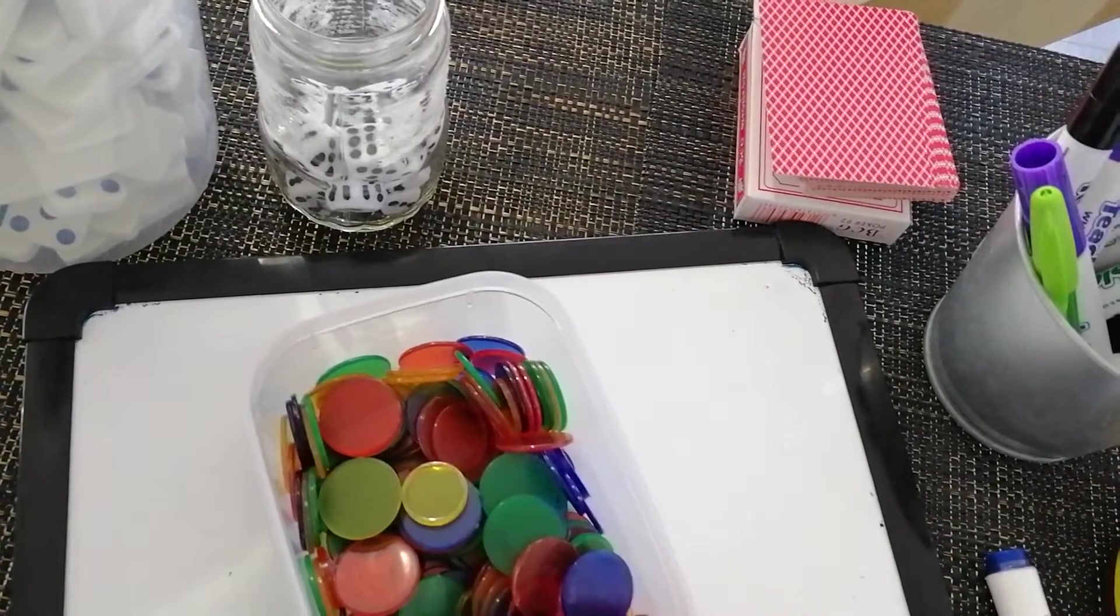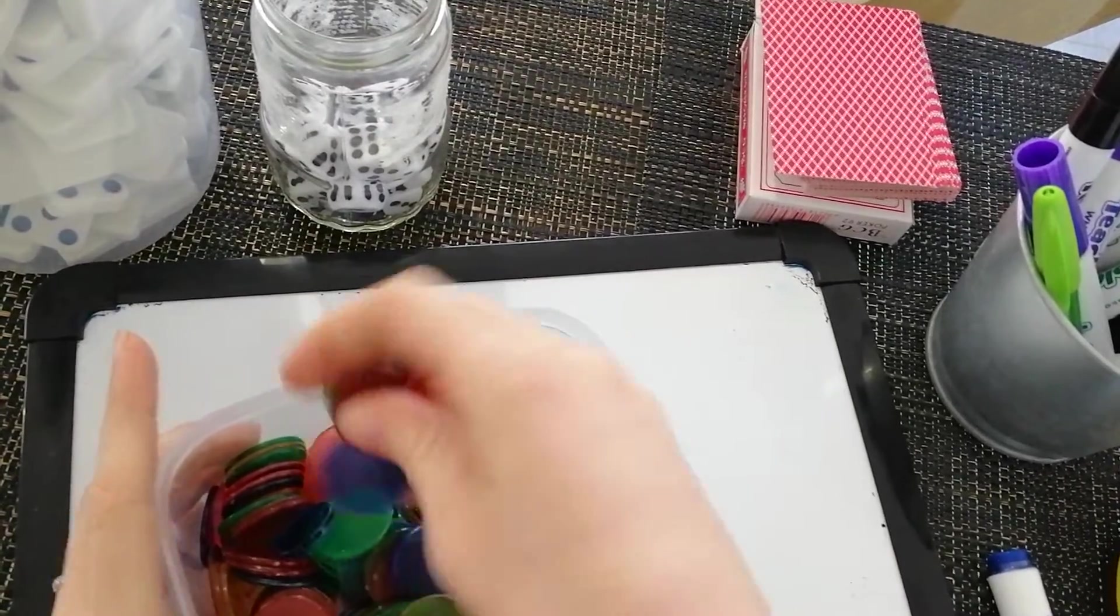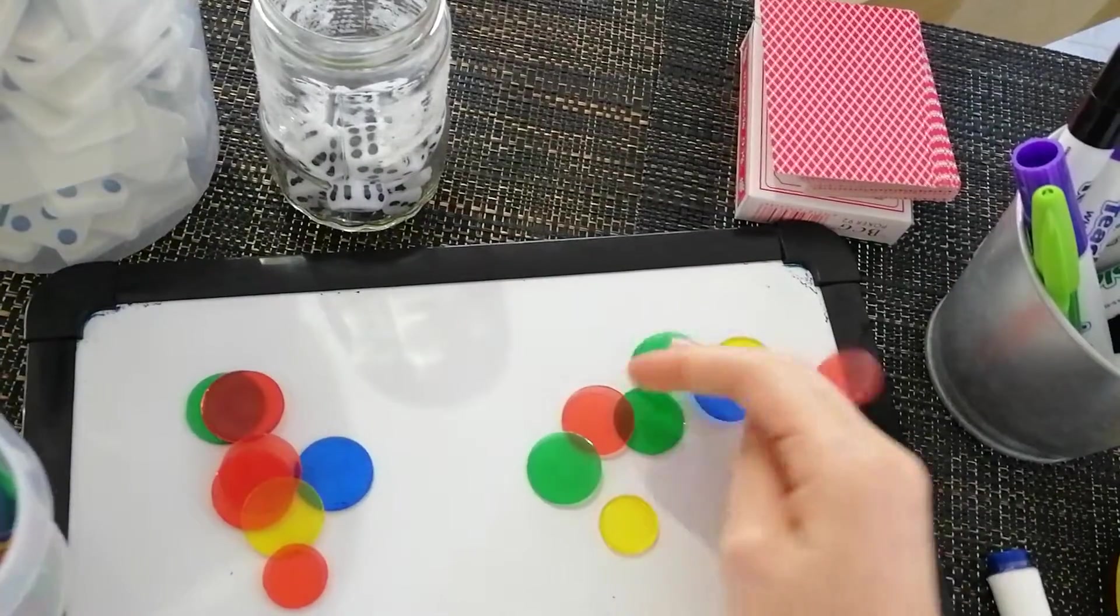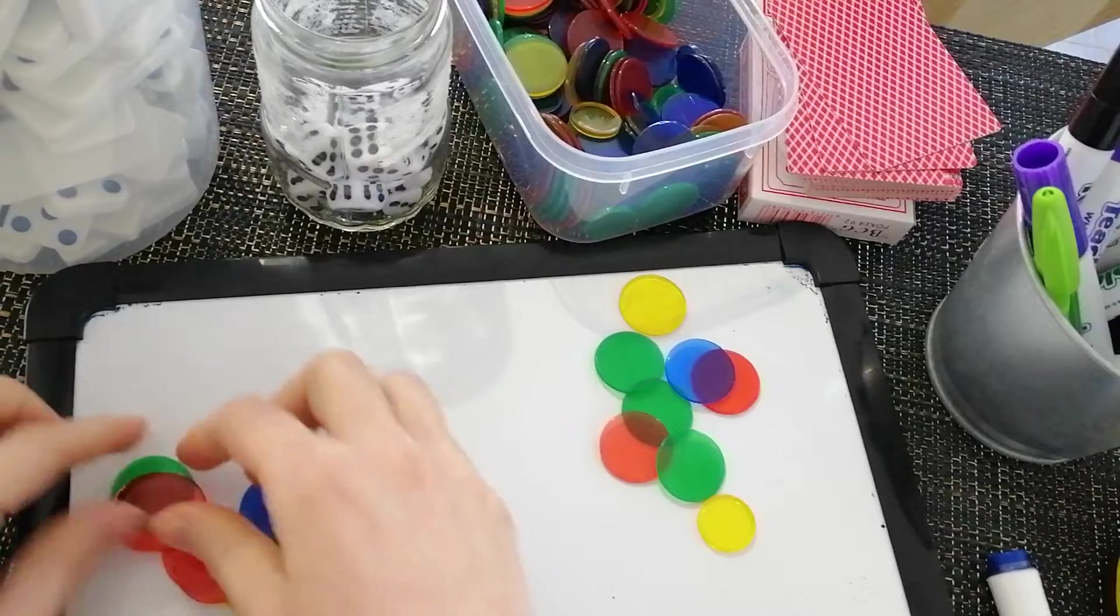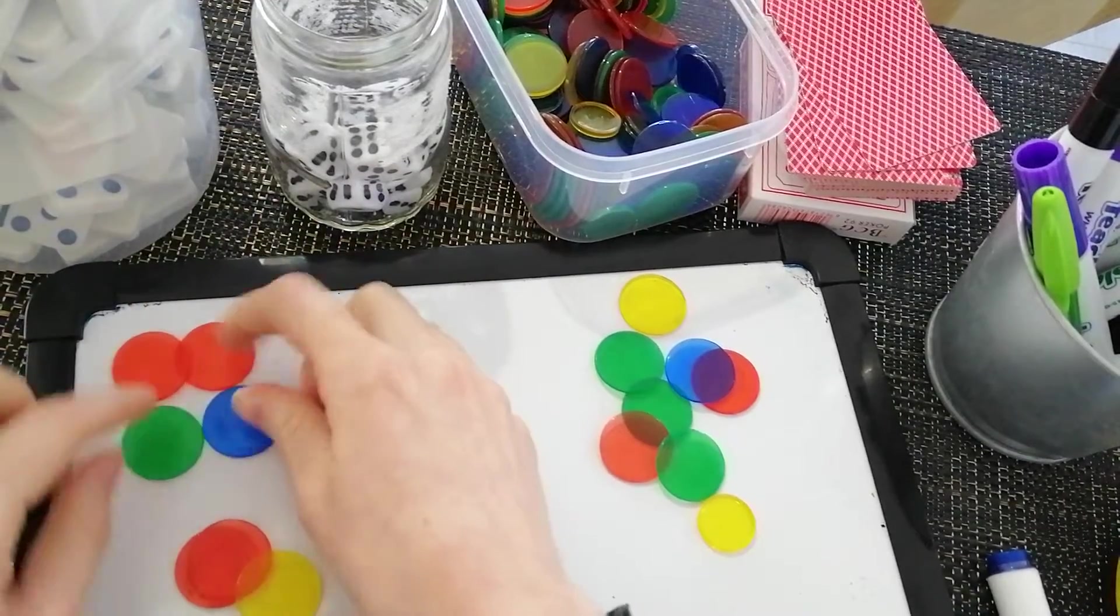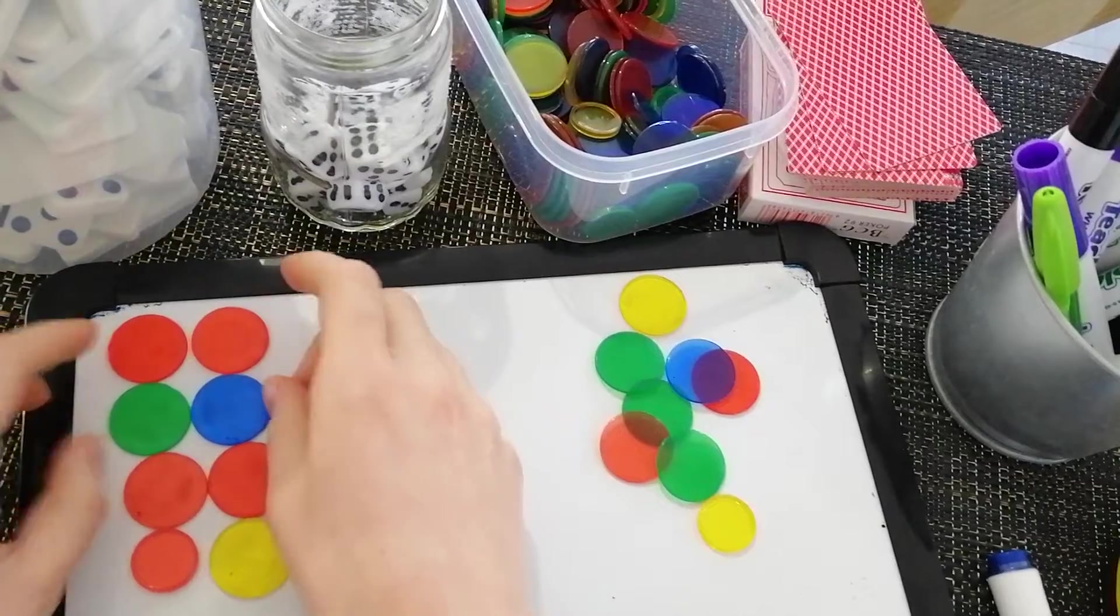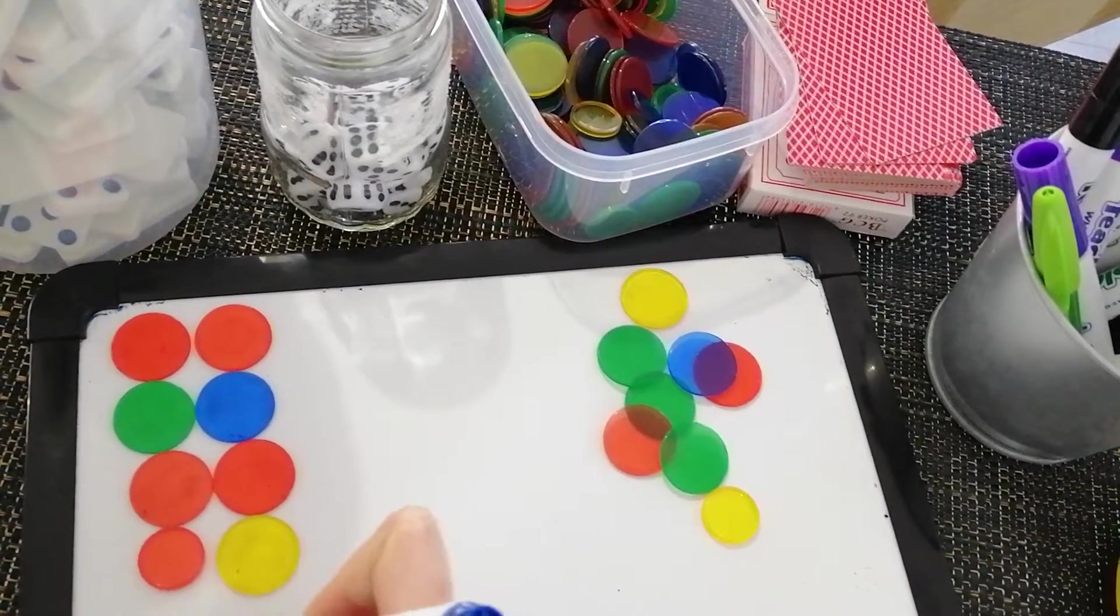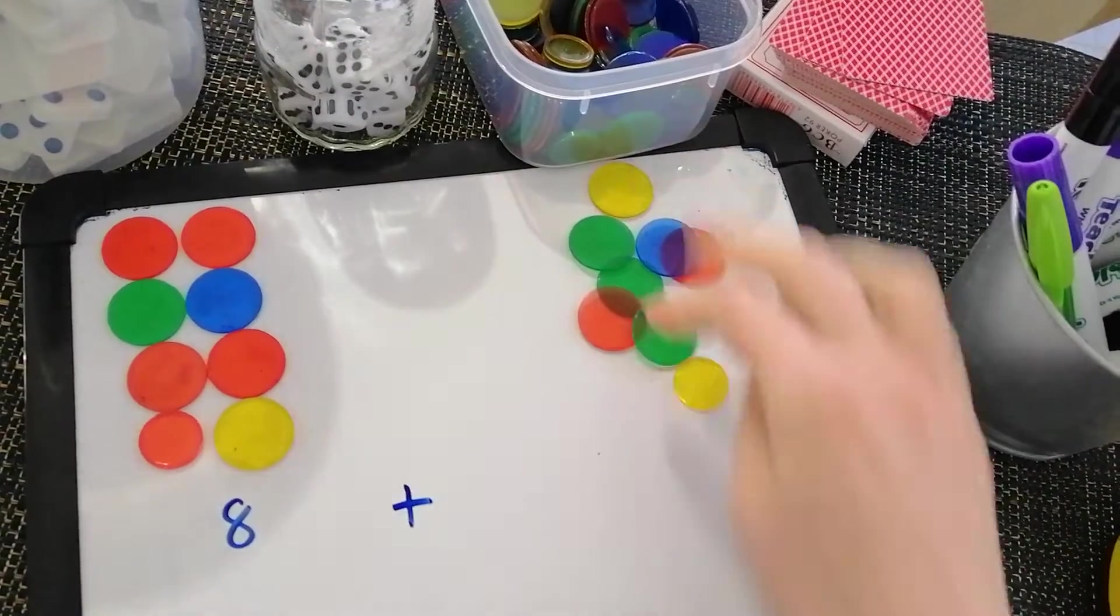The last one I'm going to show you today is counters. So I'm just going to pick out a random number. Pop them on this side. Another random number and pop them on this side. Okay. I'm going to count one side first. One, two, three, four, five, six, seven, eight. Oh, they all have a pair. They are all even numbers.